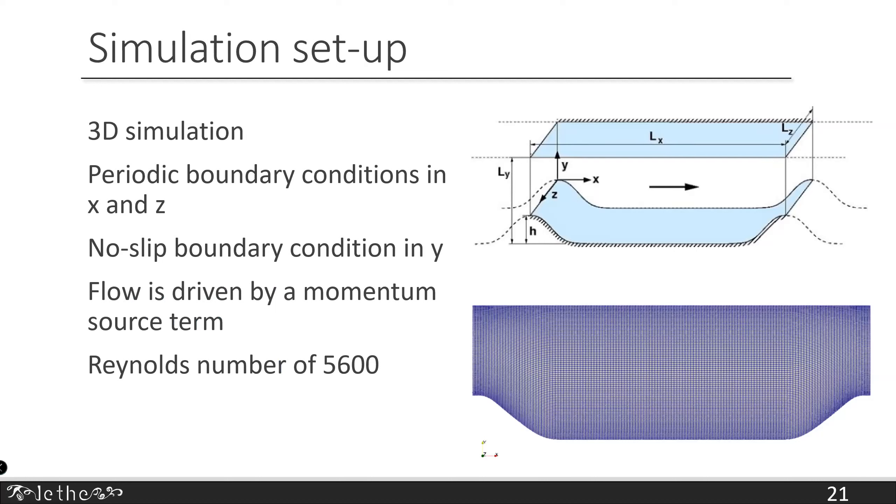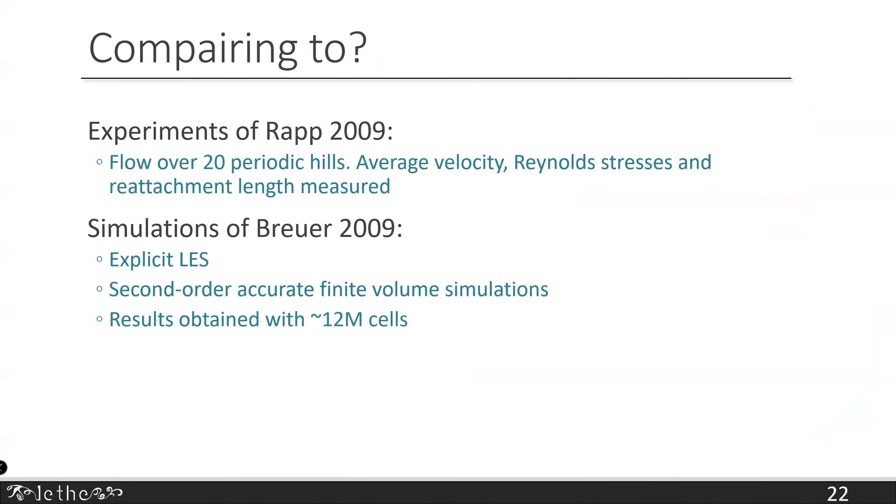The way the simulation is set up: it's a 3D simulation with periodic boundary conditions in X and Z, no-slip boundary condition in Y. The flow is driven by a momentum source term to keep a constant Reynolds number. We'll be comparing to the experiments of Rapp in 2009, very detailed and good experimental work, and the simulations of Breuer. They did explicit large eddy simulation using second-order accurate finite volume with about 12 million cells. You'll see we're using a lot less cells, but it's different type of work.